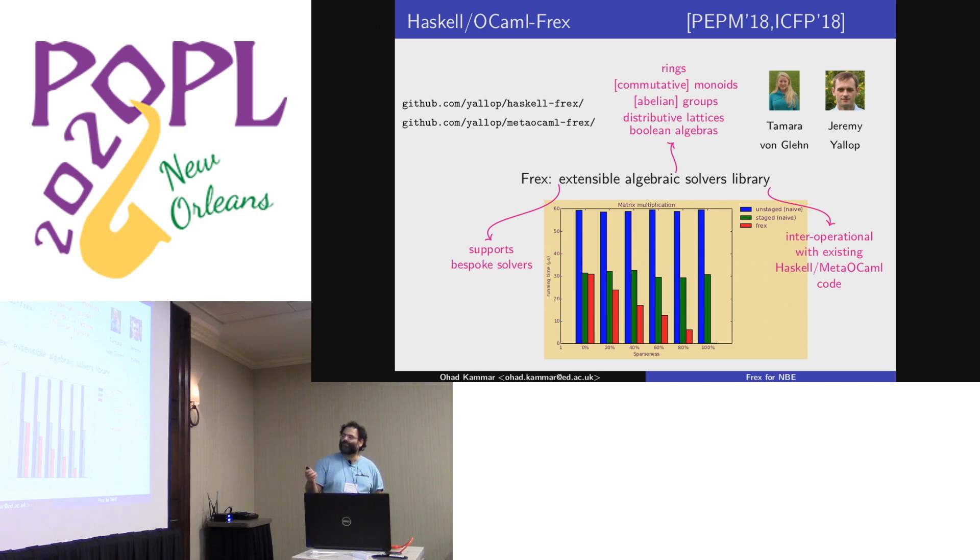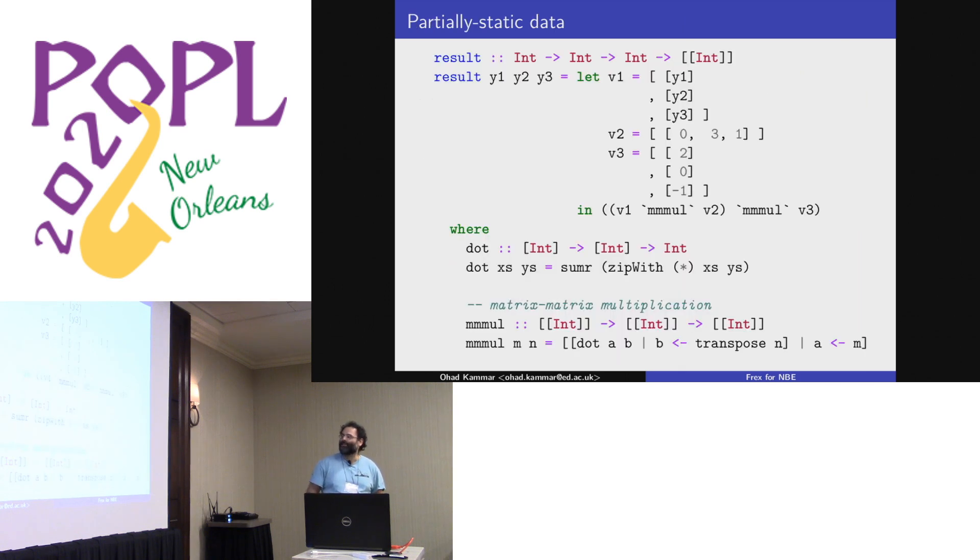And you've used it to do partial evaluation or staged computation. Okay, well, in this case, we can get a linear speed up in matrix multiplication as the sparsity goes up. And of course, when it's 100%, it's constant. And I'm just going to show quickly what that looks like.